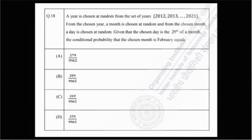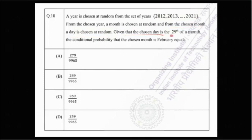A year is chosen at random from the set of years: 2012, 2013, up to 2021. This set contains 10 years in total. From the chosen year, a month is chosen at random. And from the chosen month, a day is chosen at random. Given that the chosen day is the 29th of a month, the conditional probability that the chosen month is February equals — four options are given.